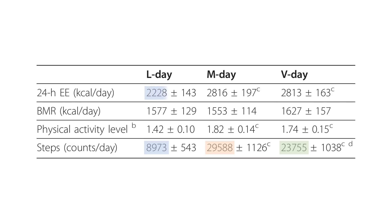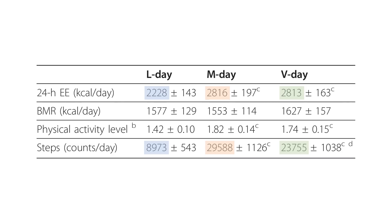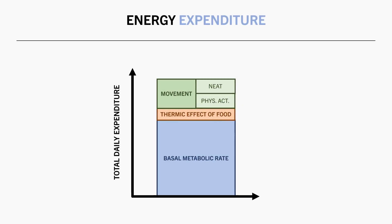On the lowest activity day, total energy expenditure was around 2,200 calories, and on the higher activity days it was around 2,800 calories. If we add the energy expended from each of these components, we get our total daily energy expenditure number.